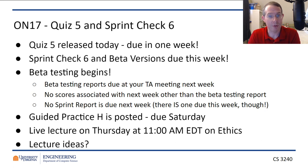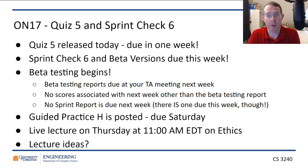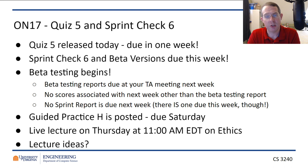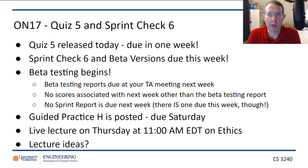Let's do the rest of the announcements. This week is Sprint Check 6 and also your beta versions. When you meet with the TAs, they're going to award you 5,000 points for Sprint Check 6 and also 25,000 points for having a working beta version ready to go for beta testing. I wouldn't stress too much about whether you did enough for the beta version for that 25,000 — if you can pass Sprint Check 6 and you have a working app, you're going to get the 25,000.